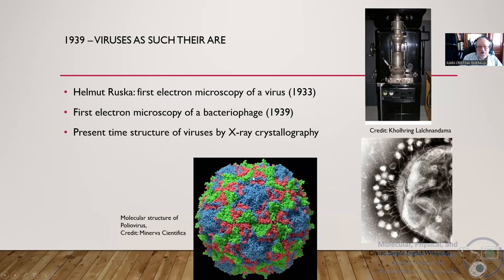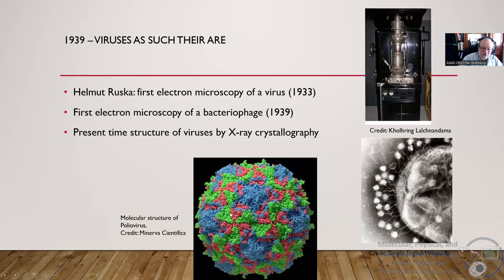Now we have X-ray crystallography structures and models. For instance, poliovirus has different proteins in color — VP1, VP2, VP3 on the surface, and VP4 behind which is important for the interaction with the cell receptor. Now we even know where each atom is. You will learn a lot of things on how this gives you really wonderful information on how things are going on. We continue to learn, and that's why virology is a very integrative science.